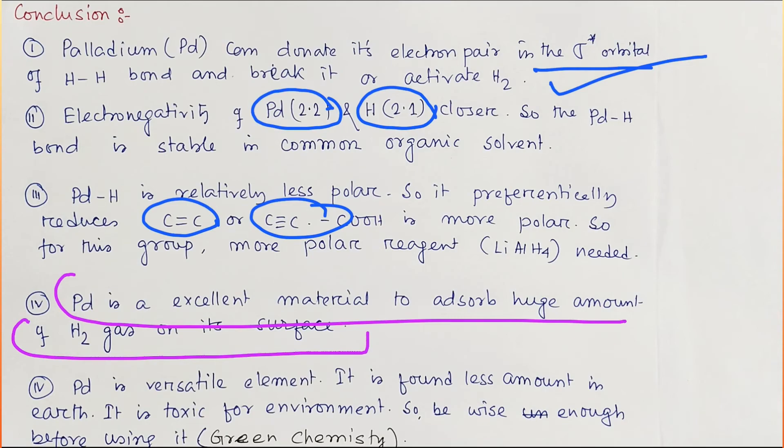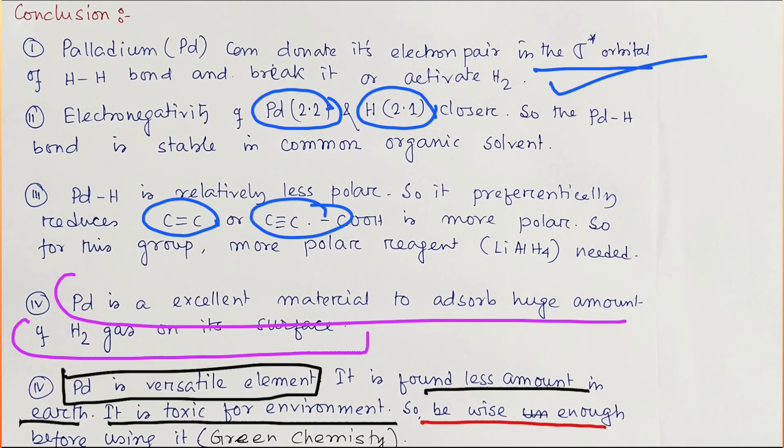Nowadays in science, there is a big issue: we need a material which can adsorb hydrogen efficiently. Palladium is one of the best choices, but it has some limitations. Why? Because see, it is a versatile or multi-talented element you can consider, but it is found in very less amount in earth. Second thing, it is toxic to the environment, so that's why this restricts us to use palladium in every case.